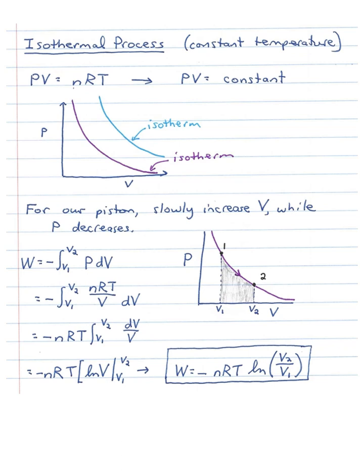Now I want to look at different types of thermodynamic processes. The first is an isothermal process. Isothermal means constant temperature — from the Greek: iso means equal, and thermal relates to temperature. Starting with PV = nRT, the ideal gas law: putting changing quantities to the left and constant quantities to the right, we get PV = constant. Thinking back to algebra, when XY = constant, we get a hyperbola shape, as you can see in this graph.